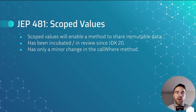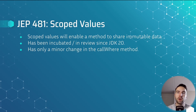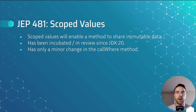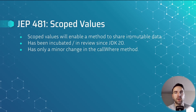JEP 481 covers scoped values, which enable a method to share immutable data both with its callees within a thread and with child threads. In JDK 23 there is one change: the 'where' method in the ScopedValue class has been changed to a functional interface.